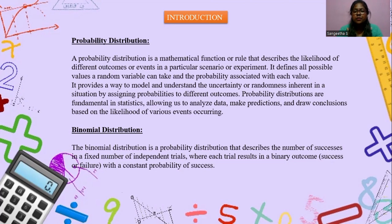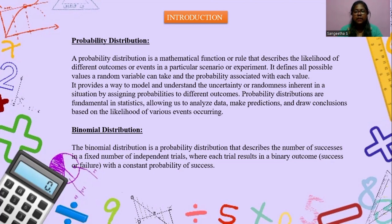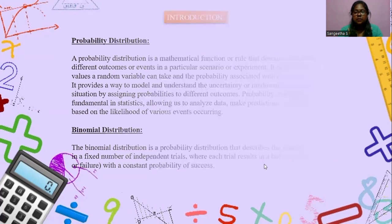Binomial Distribution. The binomial distribution is a probability distribution that describes the number of successes in a fixed number of independent trials, where each trial results in a binary outcome — either success or failure — with a constant probability of success. The best example for binomial distribution is the tossing of a coin, where you will be getting only two outcomes, either head or tail, like success or failure. This type of probability distribution is known as binomial distribution.